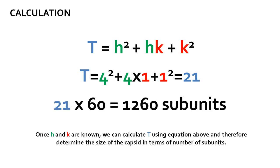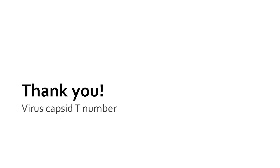We can therefore calculate the number of subunits in the capsid by multiplying 60 by T to get 1260 subunits. Feel free to watch the video again and try it on a different capsid example from the measurement slide to get a better hang of the idea.